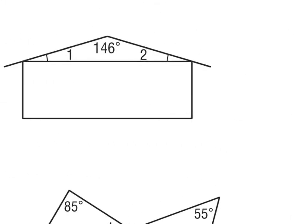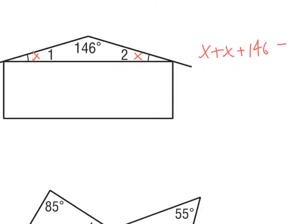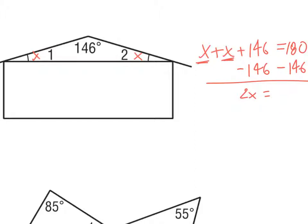Number 2 is pretty similar. I notice that two angles are congruent, so I'll call them both x. If I take x plus x plus 146 and set that equal to 180, then subtracting 146 from both sides gives 2x equals 34.